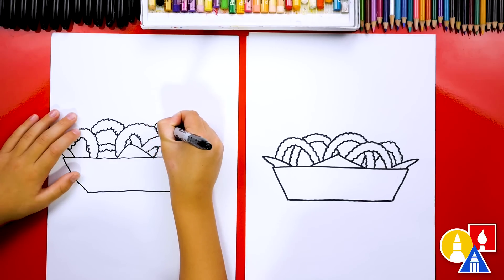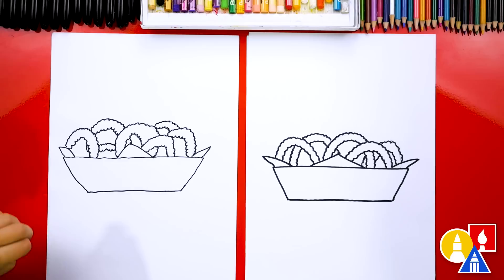This next part we're going to fast forward. I'm going to add even more onion rings. You guys could add even more to your drawing or you could leave it just like this. Yeah. Okay.